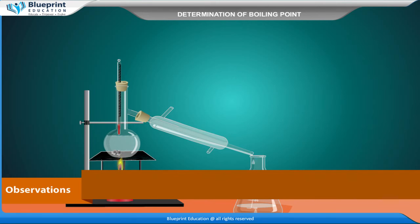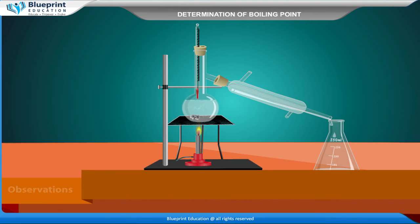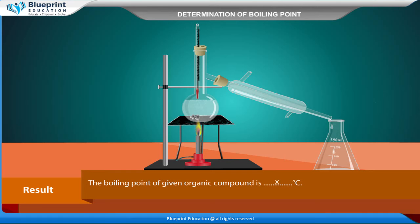Observations: The boiling point of the liquid is x degrees Celsius. Result: The boiling point of the given organic compound is x degrees Celsius.